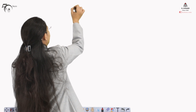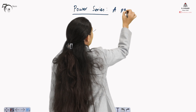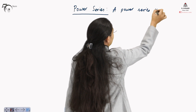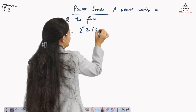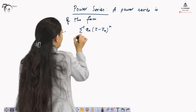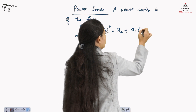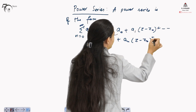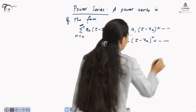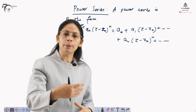Before Taylor series we must know what a power series is. A power series is of the form sigma a_n (z minus z₀) raised to the power n, where n is from 0 to infinity. Expanding this gives a₀ plus a₁(z minus z₀) plus so on, with the nth term being (z minus z₀)^n — that is why it is called an infinite series. It is called a power series because the powers of (z minus z₀) keep on increasing.